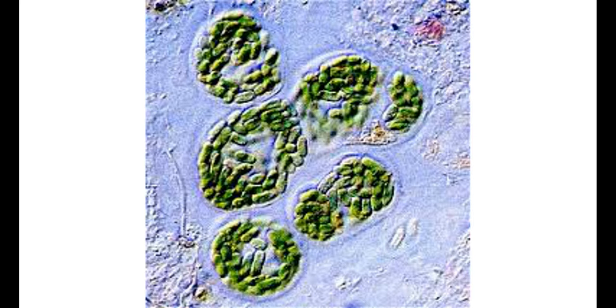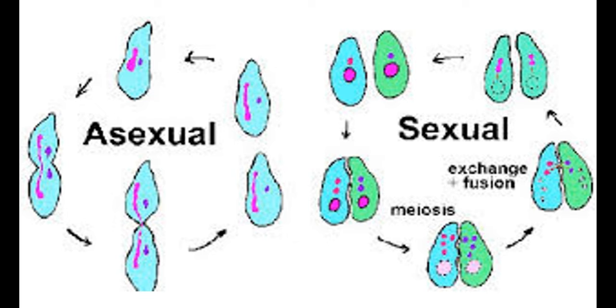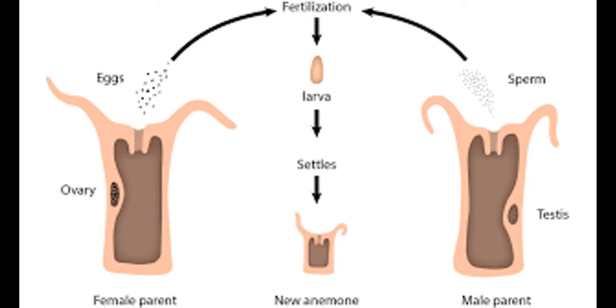Life develops into multicellular forms, and sexual reproduction is invented in the eukaryotes. Sexual reproduction helps in genetic mixing for newborns to cope with variable conditions. Genetic compositions that do not fit into the environment are phased out. Eventually, the first sexual reproduction comes in the form of eggs and sperm meeting by chance after being released into the water in vast quantities.